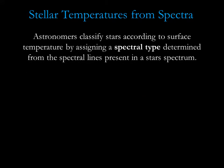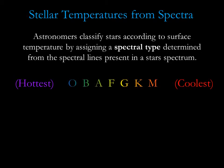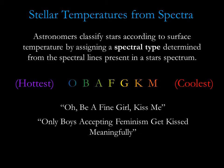We classify stars according to surface temperature by assigning a spectral type determined from the spectral lines present. The hottest stars with the bluest colors are called spectral type O. The next hottest stars are spectral type B, followed by A, F, G, K, and M, with spectral type M being the coolest. There are several mnemonics for remembering the spectral types.